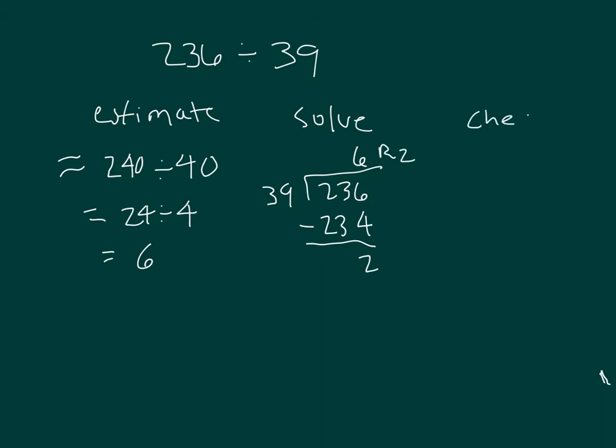Let's show you the check as well. Write 39 and multiply it by 6. 6 times 9 is 54, regroup of 5. 6 times 3 is 18, plus 5 is 23. And we add in the remainder of 2. We get 236, which matches the dividend, what we were dividing.